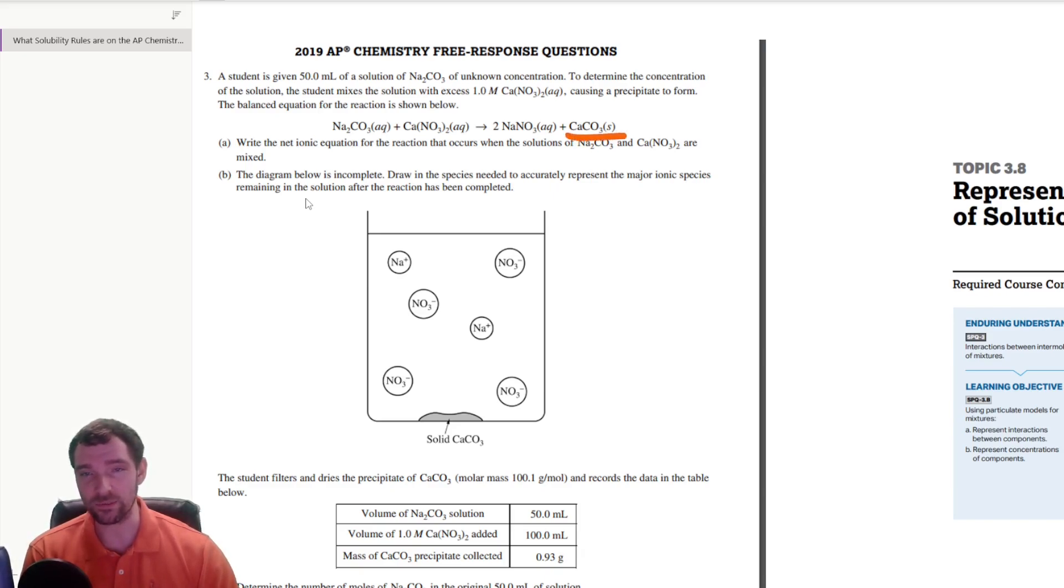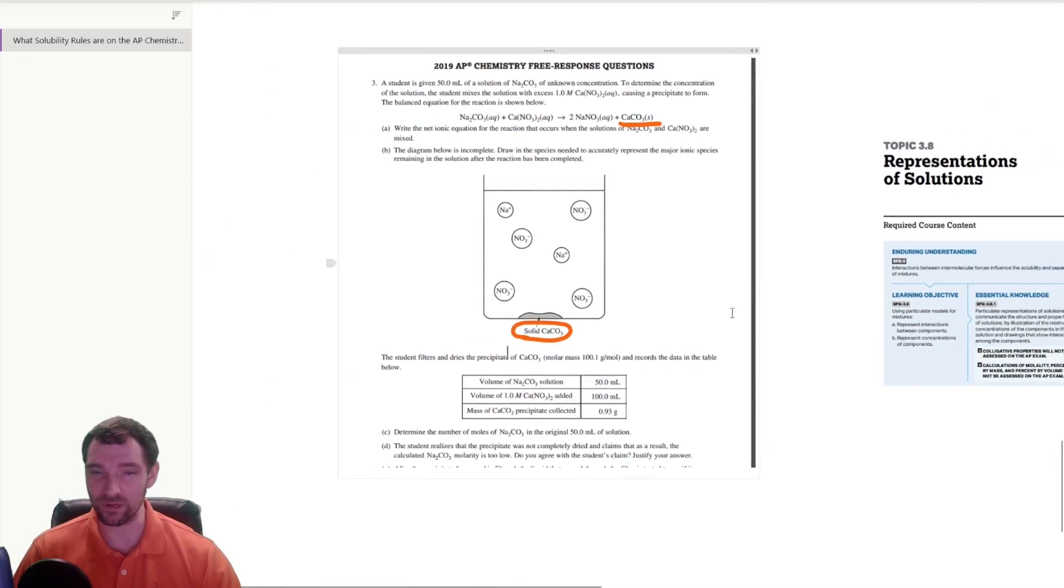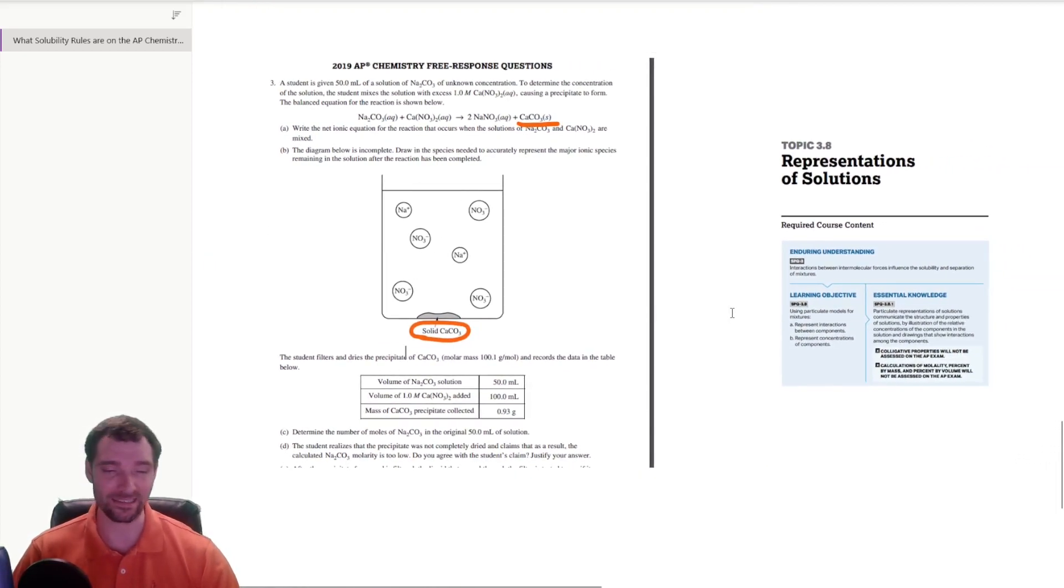Look, they even write out what the precipitant is, the formula and everything. They label it. That's not the focus of the test like it used to be. When I took the test, you needed to know which one would be the precipitant. But that's not the case anymore.